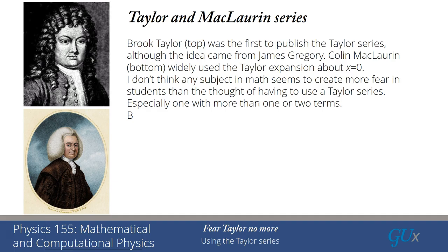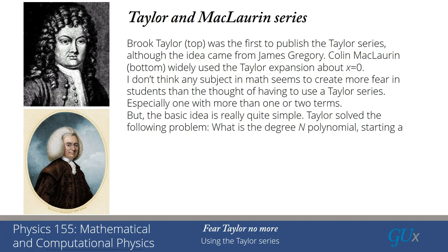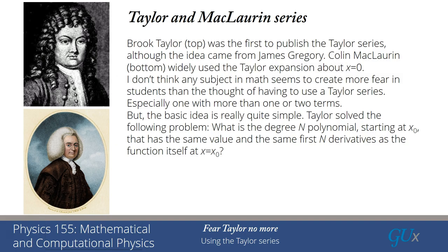So the basic idea is really quite simple. What the problem Taylor solved is the following one. What is the degree n polynomial starting at a particular value of x that we'll call x₀ that has the same value and the same first n derivatives as the function itself evaluated at x equals x₀. So we're going to approximate some complicated function with a polynomial. Polynomials are nice. We know how to express them. And our constraint is we're going to want to make sure that the function and its first n derivatives agree with the value of the polynomial and its first n derivatives at a particular point. That point being x equals x₀.